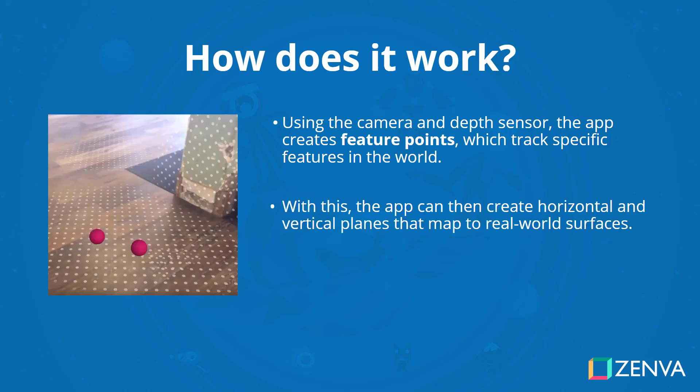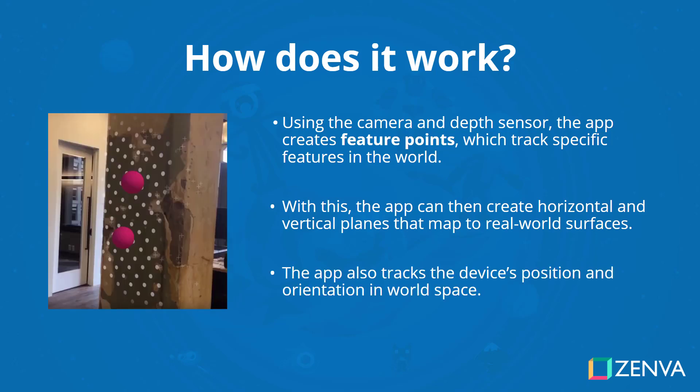With this, the app can then create horizontal and vertical planes that map out real world surfaces. As you can see in the image, it can track the floor and walls. The app also tracks the device's position and orientation in world space so you can walk around your environment — it memorizes and catalogues the environment and feature points. So you could go into an entirely different room, look around the walls there, and then go back and all the feature points and objects you placed before will still be there.